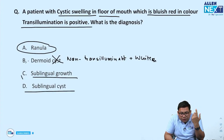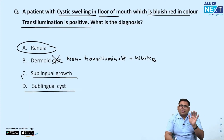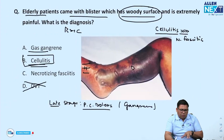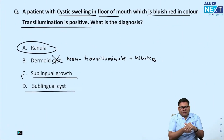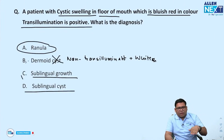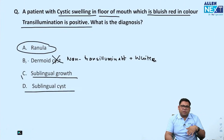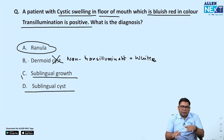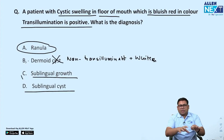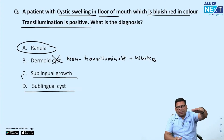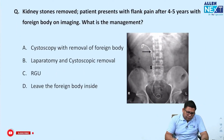Clarification on the cellulitis question: swelling going beyond the red area points more toward cellulitis than necrotizing fasciitis. Cellulitis is a superficial presentation. Necrotizing fasciitis starts from the lower surface — the abscess forms deeper, making tissues boggy, not woody. A woody blister-like presentation starting from the superficial part indicates cellulitis.